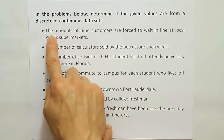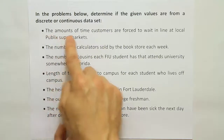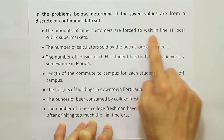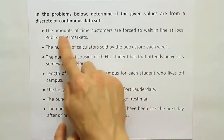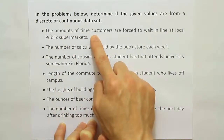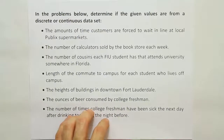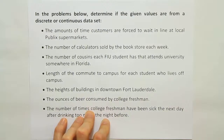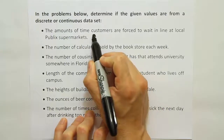So when I read the first example, let's try to figure out what kind of data is involved. It says the amounts of time customers are forced to wait in line at local public supermarkets. The amount of time — we would use a stopwatch to measure that. You would click the stopwatch to start, then click it to end, and we could get any fraction of a second. You can say a person waited two minutes, 37 seconds, and two ten-thousandths of a second. So I'm going to say that this data set is continuous.